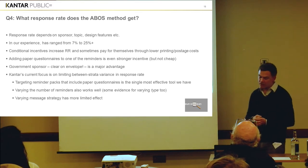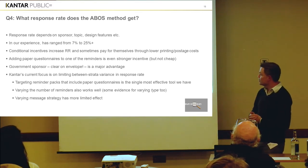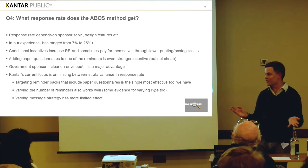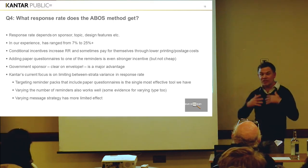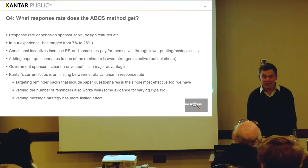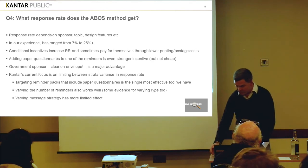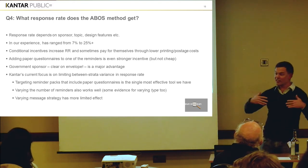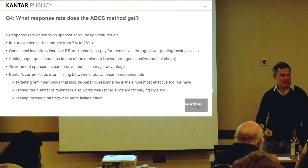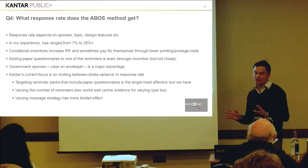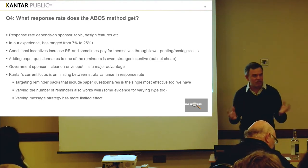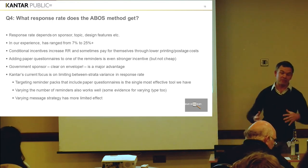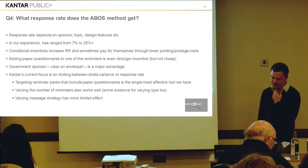Adding paper questionnaires to one of the reminders is an even stronger incentive. Though you think everybody's doing everything online, paper questionnaires are not just for people who don't do things online — they bring in lots of people who just prefer to do it that way. If you put paper questionnaires in every second reminder, you would get half the completes on paper. So people don't want to do it online as much — give them one chance with paper and they'll take it. And because paper data is quite constrained in what it includes, we don't really want to do that. We want to push them to web, but we have to include paper in some ways if we want a higher response rate, as well as including some of these offline individuals.